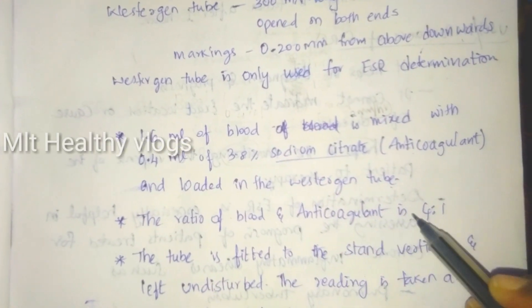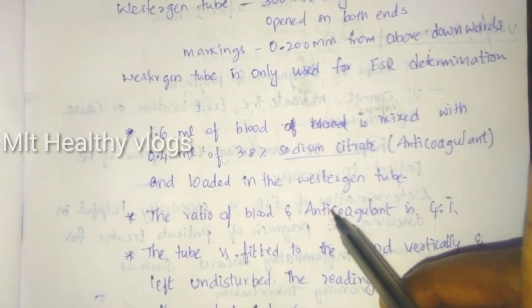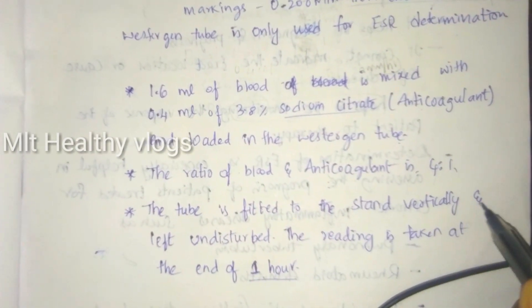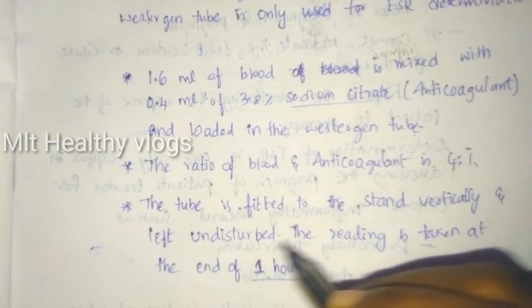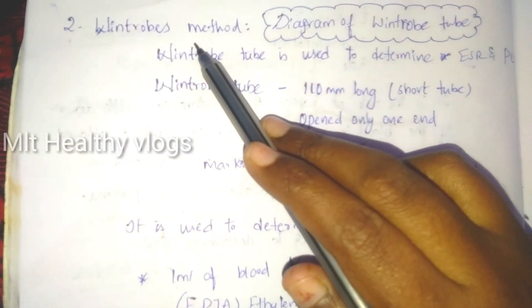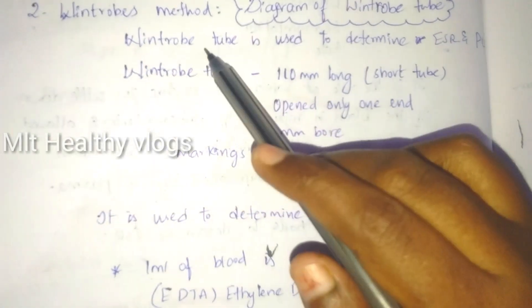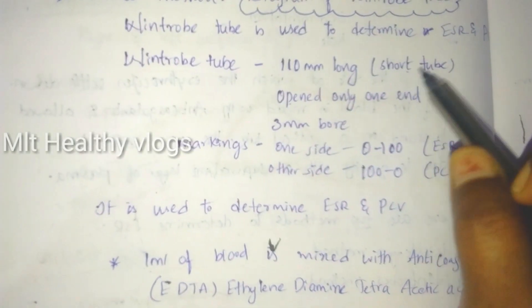The ratio of blood to anticoagulant is 4 to 1. The tube is fitted to the stand vertically and left undisturbed. The reading is taken at the end of 1 hour.